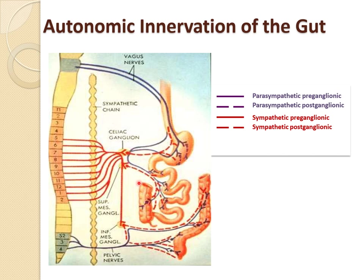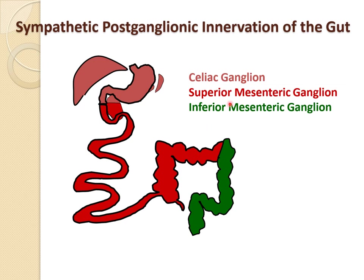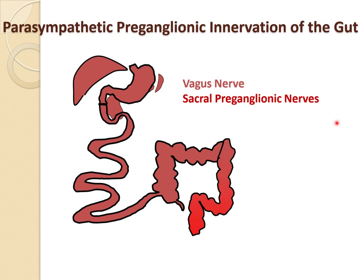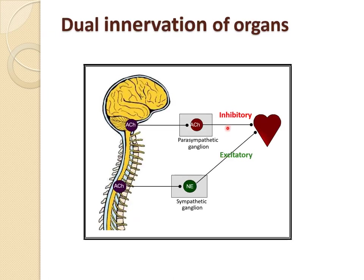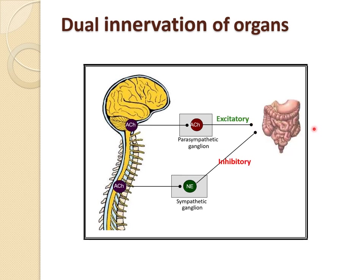To summarize: parasympathetic comes from the medulla via the vagus nerve and sacral segments; sympathetic comes from the thoracic to the second lumbar segments. In dual innervation of organs like the heart and kidney, parasympathetic is inhibitory and sympathetic is excitatory. But in the GIT, the action is reversed — sympathetic effect on the GI tract is mainly inhibitory, and the parasympathetic effect on the GI tract is excitatory.